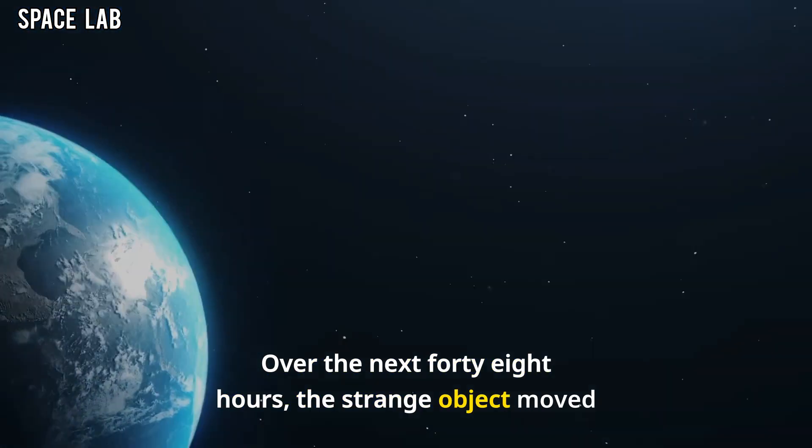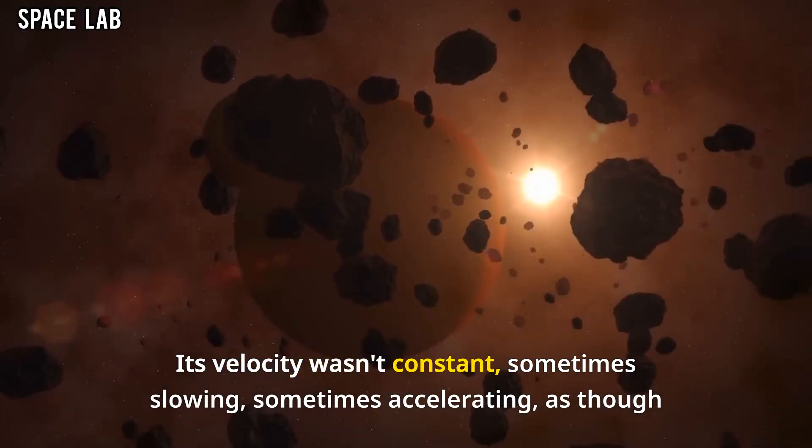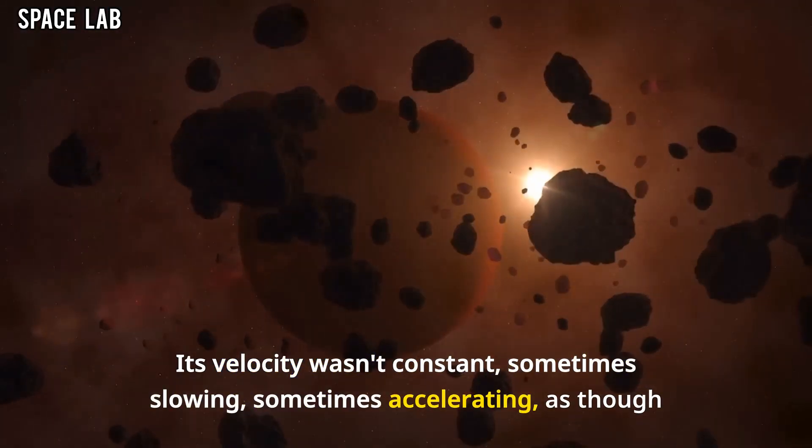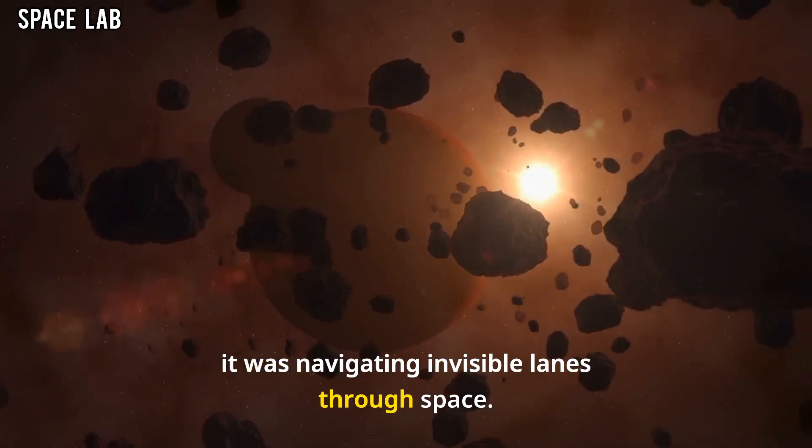Over the next 48 hours, the strange object moved closer to the inner solar system. Its velocity wasn't constant, sometimes slowing, sometimes accelerating, as though it was navigating invisible lanes through space.